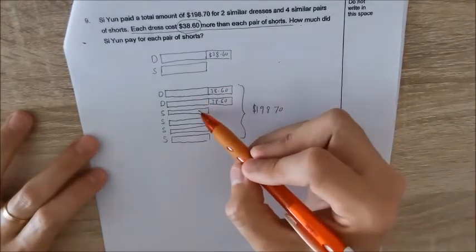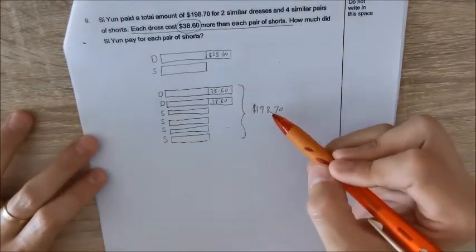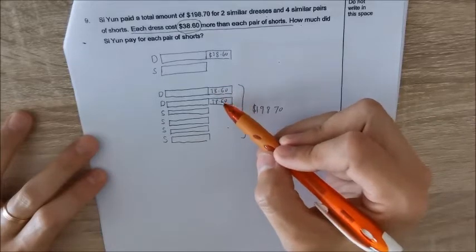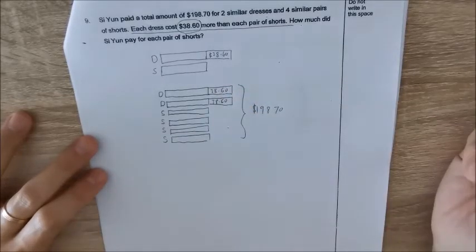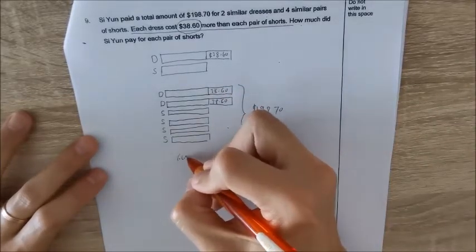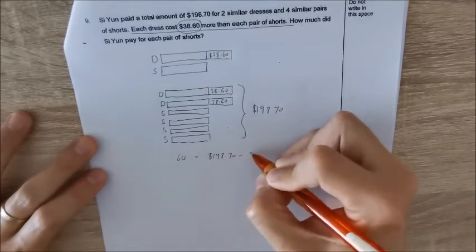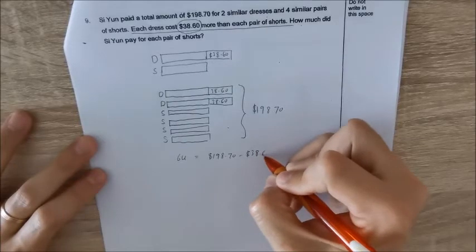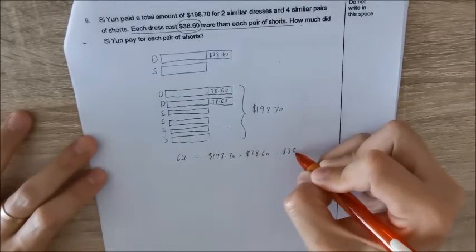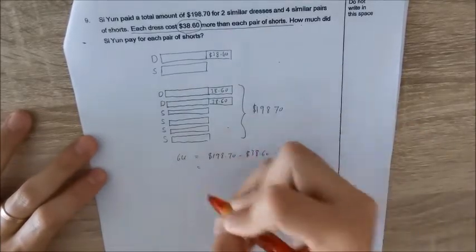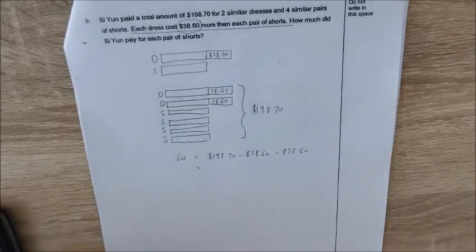Isn't it just one, two, three, four, five, six equals to the total take away this $38.60. Right, so six units will give us $198.70 minus $38.60 minus $38.60.